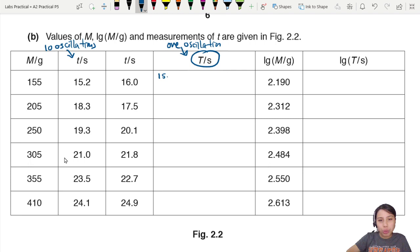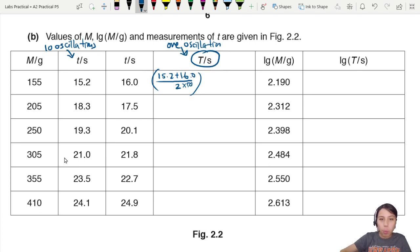For example, 15.2 plus 16 divided by 2 gives the average — but that's for 10 oscillations, so you then divide by 10. First find the average, then divide by 10 because we want one oscillation.